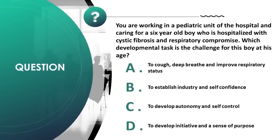You are caring for a 6-year-old boy hospitalized with cystic fibrosis and respiratory compromise. Which developmental task is the challenge for this boy at his age? A) to cough and deep breathe and improve respiratory status, B) to establish industry and self-confidence, C) to develop autonomy and self-control, D) to develop initiative and a sense of purpose. Correct answer is D.